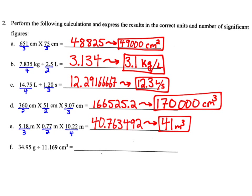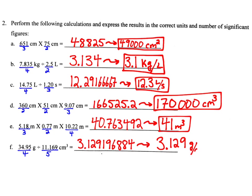Finally, we have 34.95 grams divided by 11.169 cubic centimeters. 34.95 has four sig figs, and 11.169 has five sig figs. So our final answer has to have four significant figures because of the 34.95. We plug it into our calculator and get 3.129196884, and we round that to four significant figures, giving us 3.129. Our units come from grams divided by cubic centimeters, so that would be grams per cubic centimeter — units of density. Our final answer is 3.129 grams per cubic centimeter.